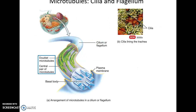Microtubules also help form cilia and flagella, which are structures at the plasma membrane built from microtubules. Cilia move materials outside of the cell, while flagella move the cell itself — flagella are found only in sperm cells.